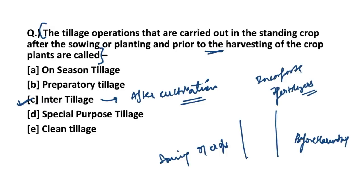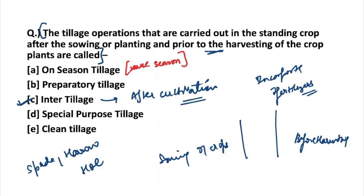Various equipment are used during inter tillage operations: spade, harrow, and hoe. Now, on-season tillage refers to operations done for raising crops in the same season — whatever tillage is done for the same-season crops is known as on-season tillage. Preparatory tillage, as the name suggests, is the operation done to prepare the field for raising the crop. Special purpose tillage will be discussed in the next question.